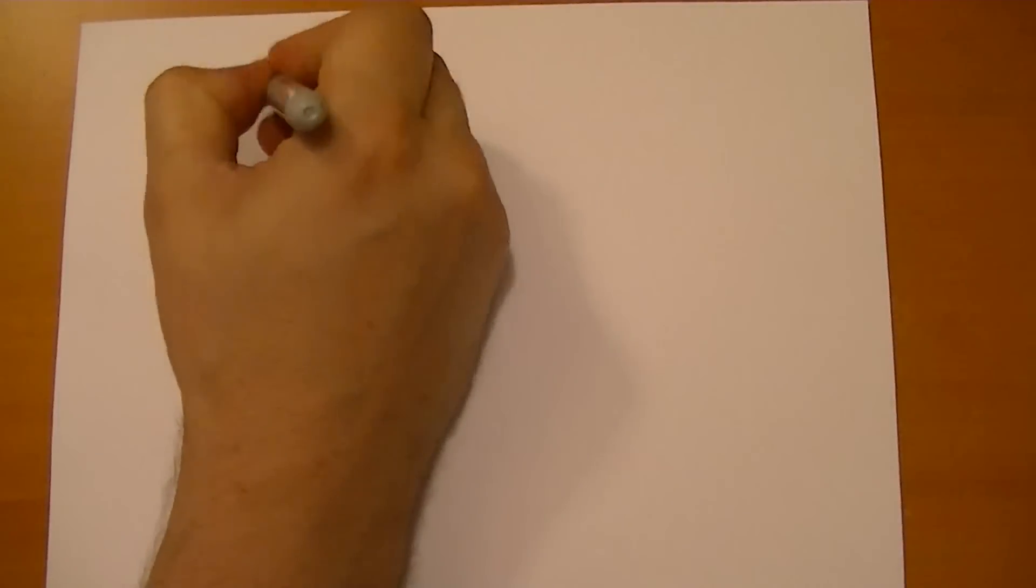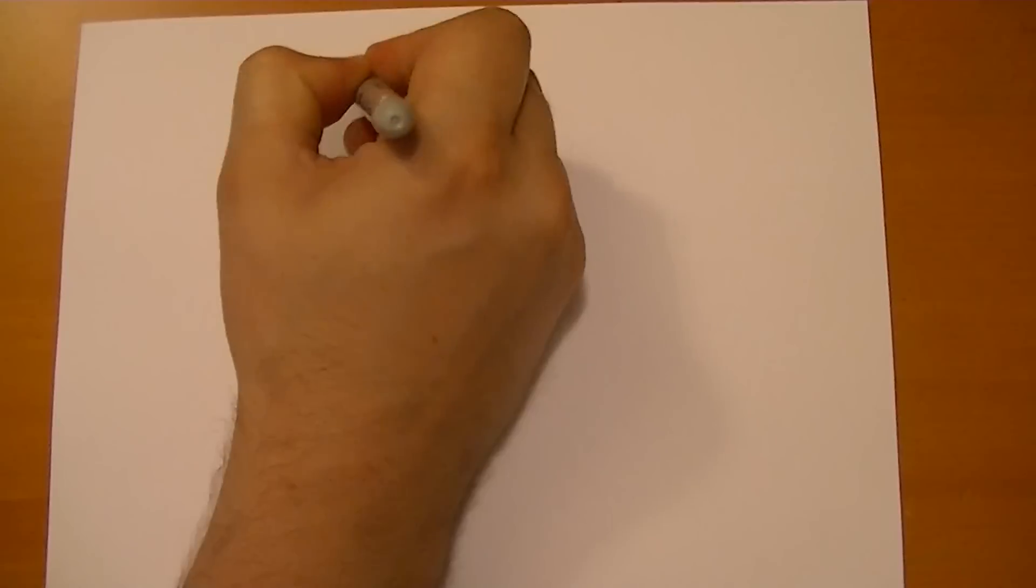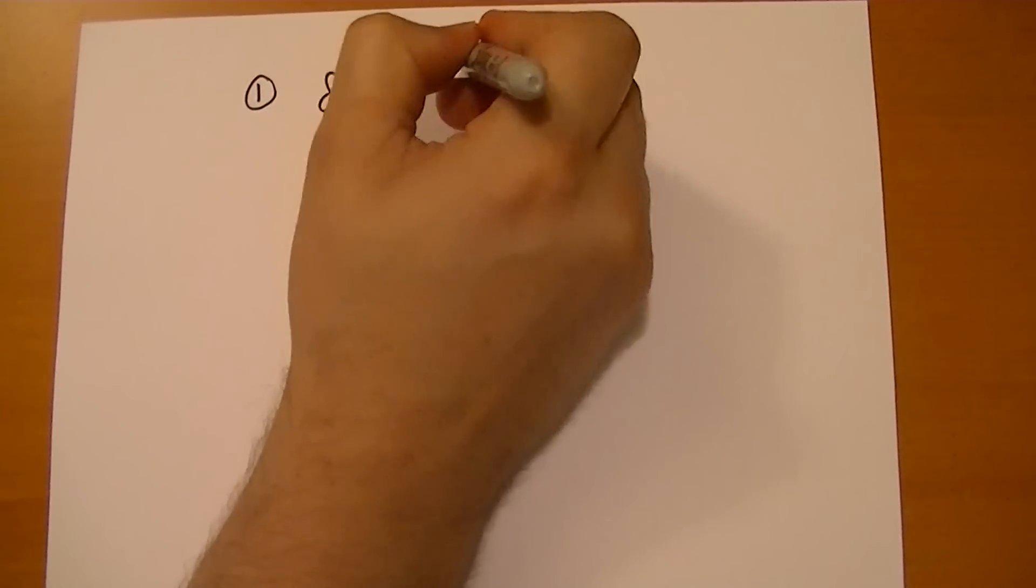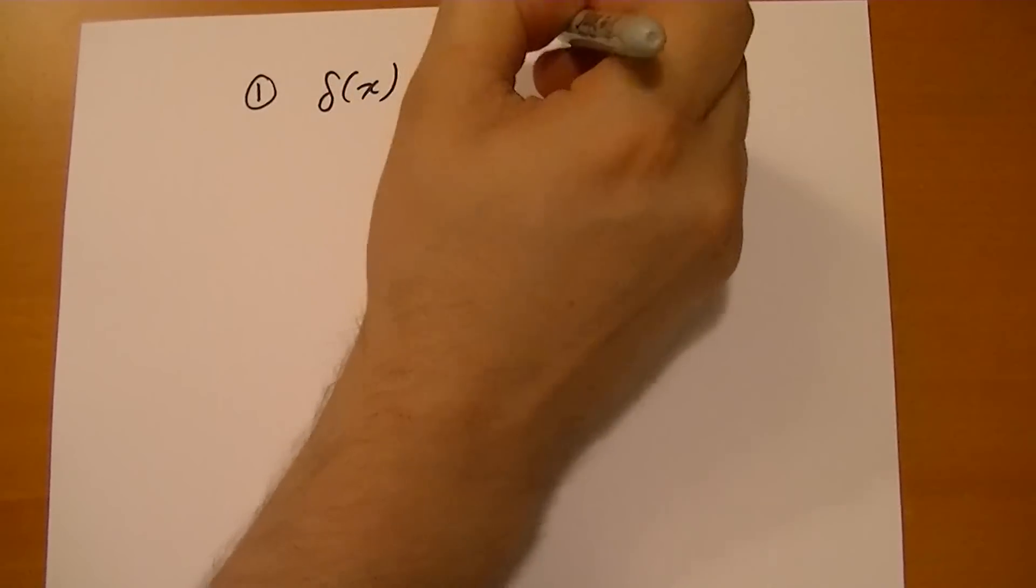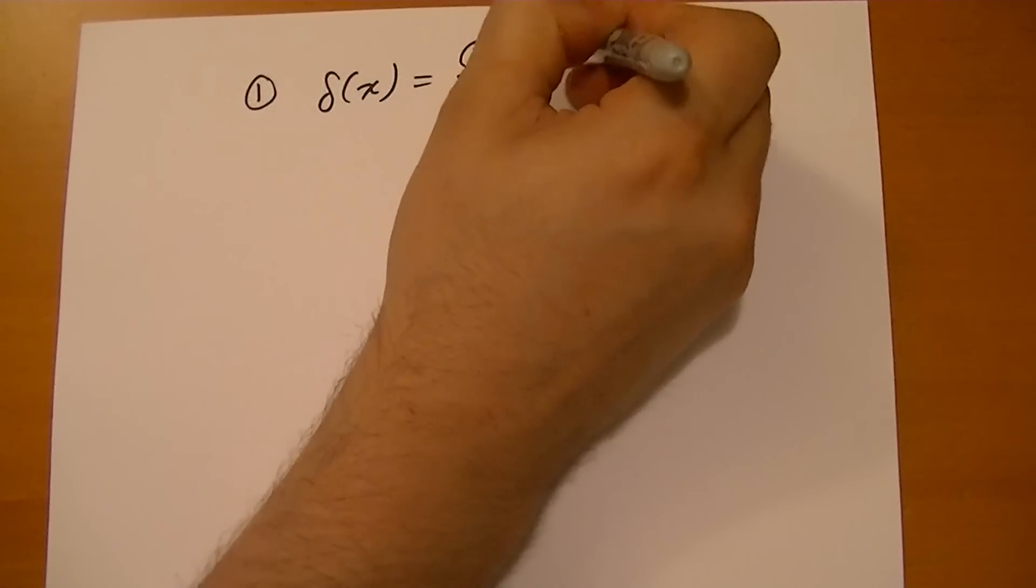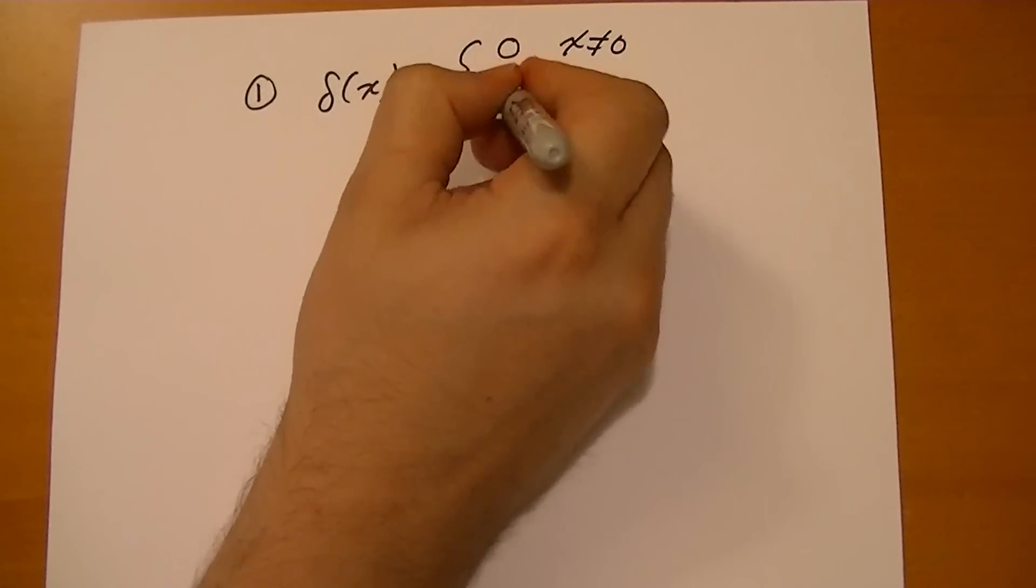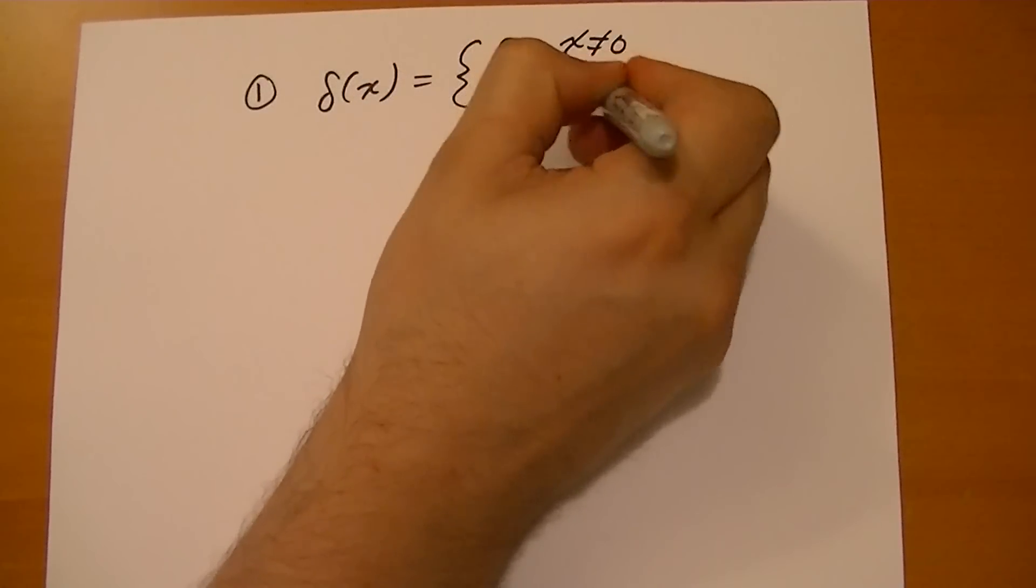The rules are, one, that this curly delta function, Dirac delta function, is zero wherever x is not equal to zero, and it's infinity or undefined where x equals zero.